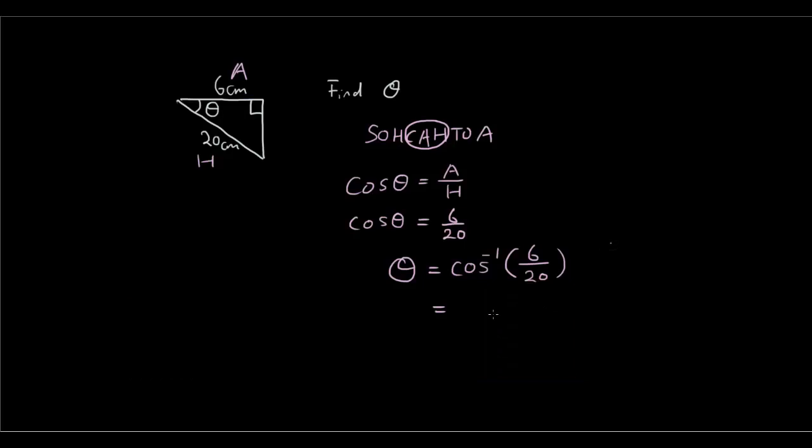And that is the answer. Okay, thanks for watching the tutorial on how to find an unknown angle in a right angle triangle given two sides using trigonometry. See you next time.